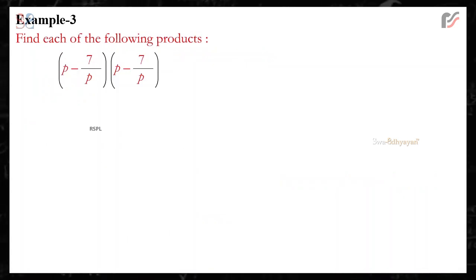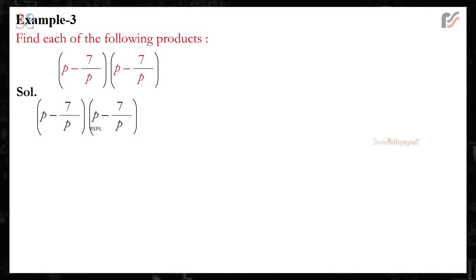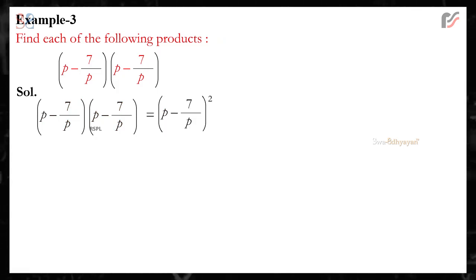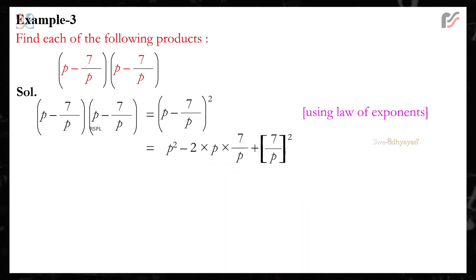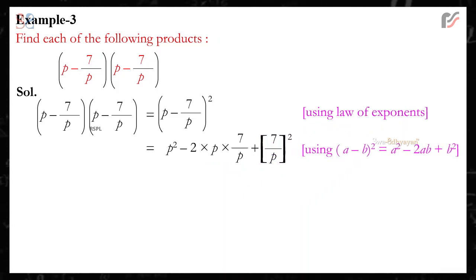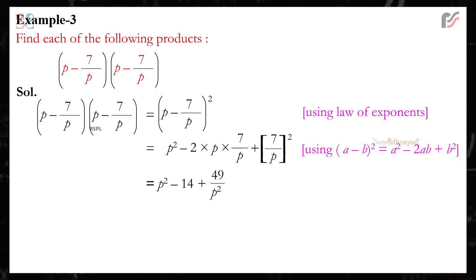Example 3: Find each of the following products. (p − 7/p)(p − 7/p). Solution: (p − 7/p)(p − 7/p) = (p − 7/p)², using the law of exponents, which equals p² − 2 × p × (7/p) + (7/p)², using (a − b)² = a² − 2ab + b², which equals p² − 14 + 49/p².